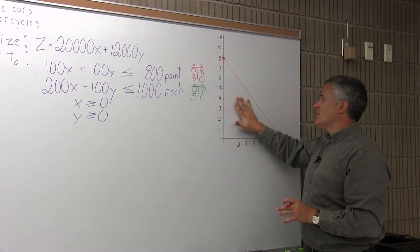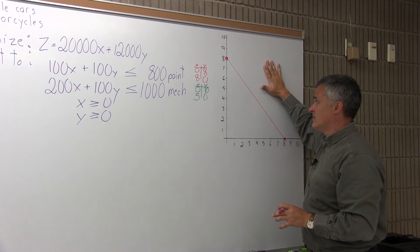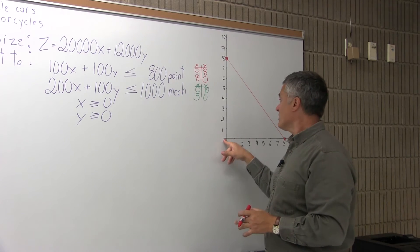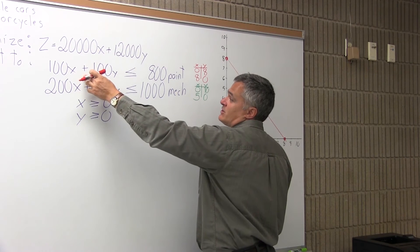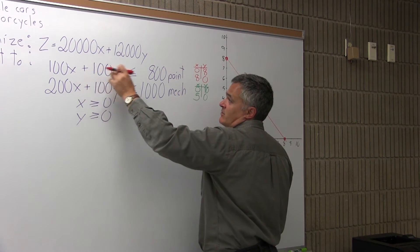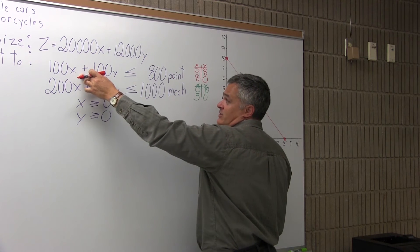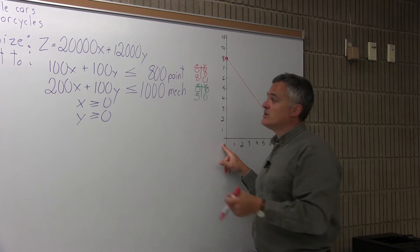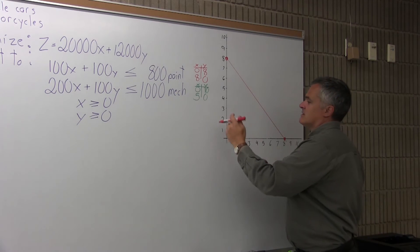Now I have to decide whether to shade beneath the red line or above it. I pick a test point that's not on the line — I'll use (0, 0). I put it into the paint constraint: 100X plus 100Y is less than or equal to 800. If I zero the X and Y, I get 0 is less than 800. That's true, so my test point is on the shaded side — the underneath side.